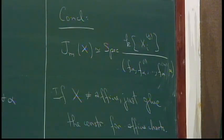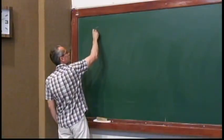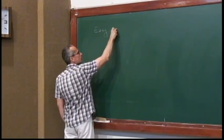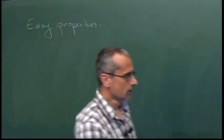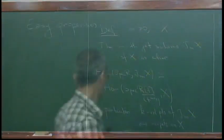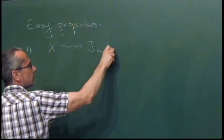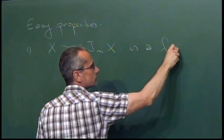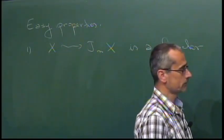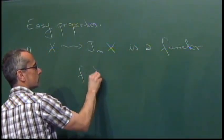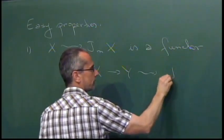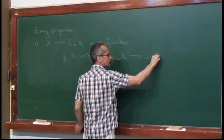Let's deduce some basic properties just from the definition. First, it's functorial: the map taking X to J_M(X) is a covariant functor. If you have a map F from X to Y, you get an induced map F_M from J_M(X) to J_M(Y), simply because if I have an R-valued point of J_M(X), I compose the corresponding map to X with the map from X to Y.